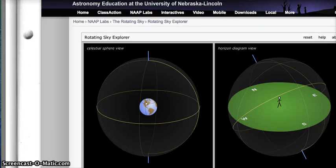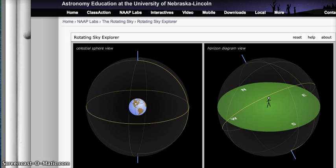This is a nice simulation from the University of Nebraska that is a nice way to think about the 3D picture that goes with some of the two-dimensional drawings that we're working with in class. So let me show a little bit how we might use this simulation, the Rotating Sky Explorer, and show how it connects to the diagrams from class.